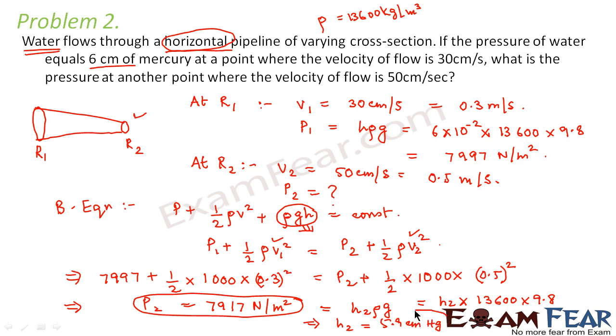So we can say that the pressure is 5.9 centimeter of mercury column. So I hope it is clear to you now that how do we apply the laws and the formulae, the equations which we studied so far. How do we apply them to solve problems?